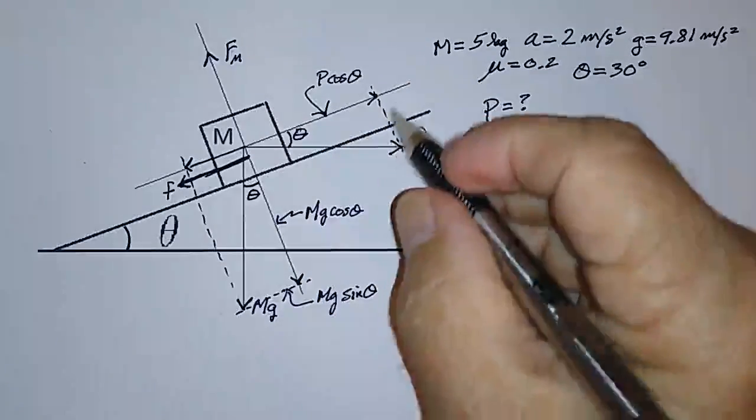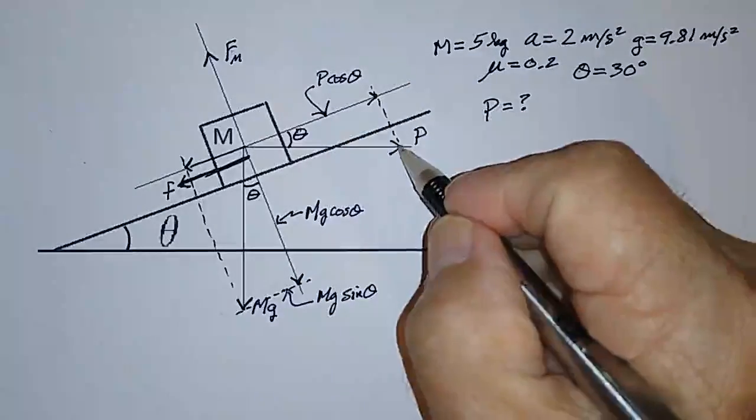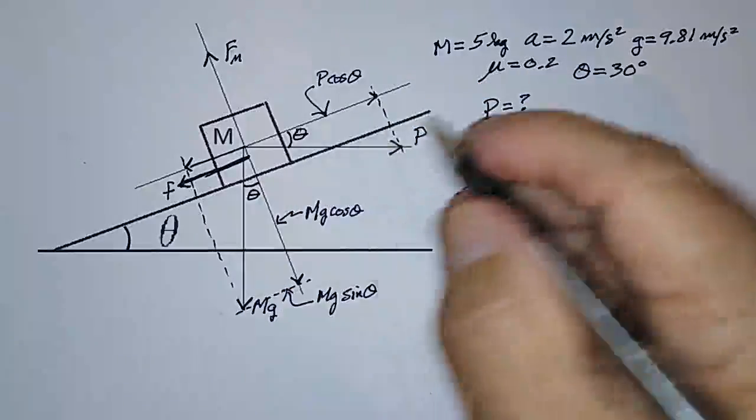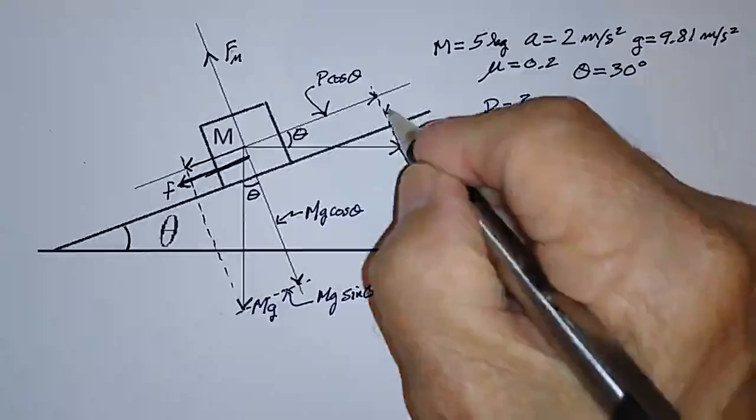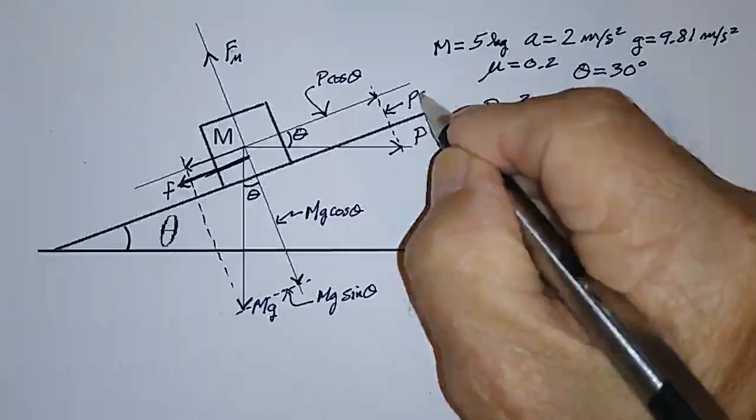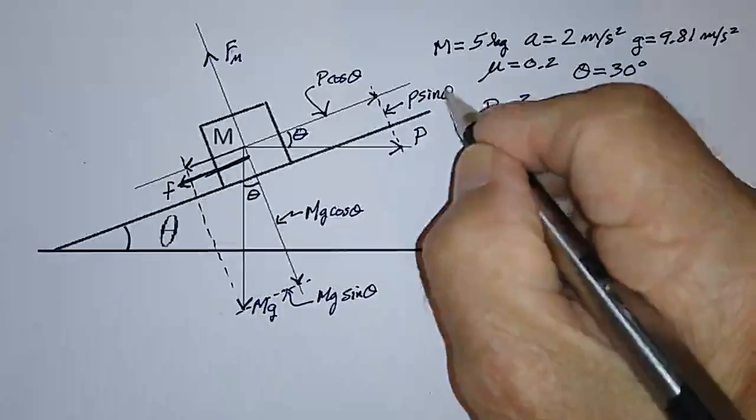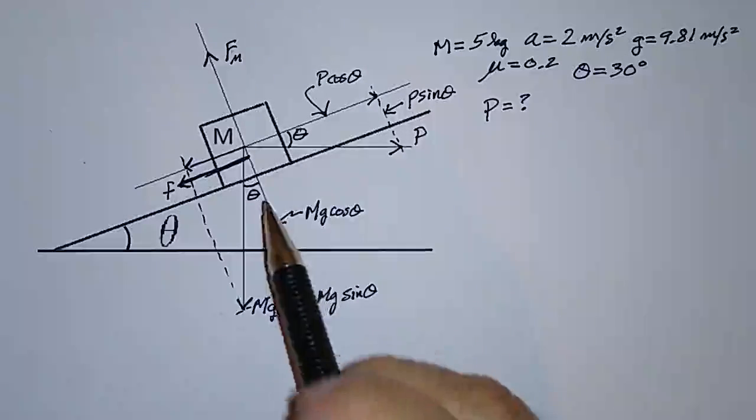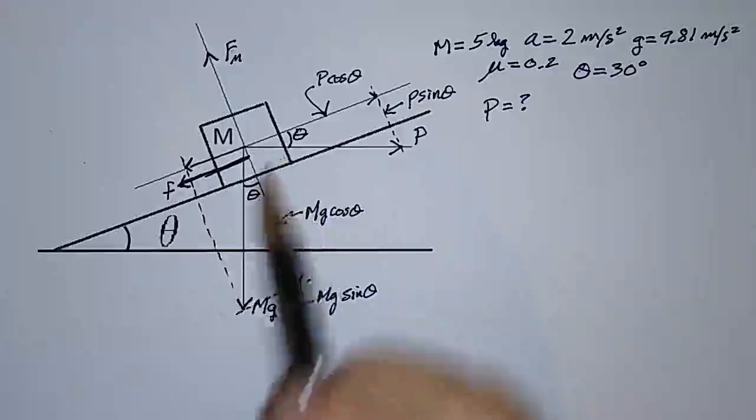And there's a component of the pushing force P that's also perpendicular to the plane. And this one is P sine theta. So now we have all the forces that we need to write Newton's second law.